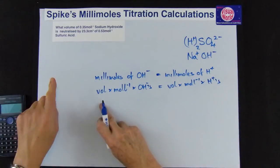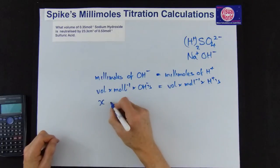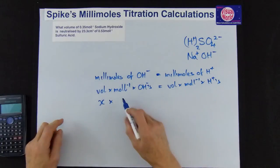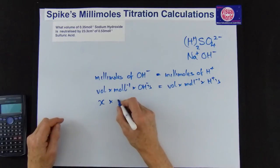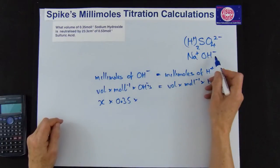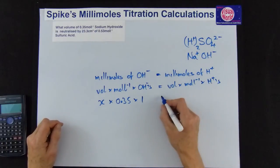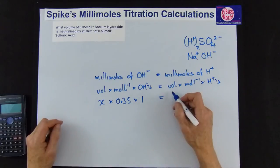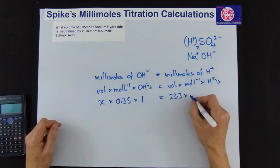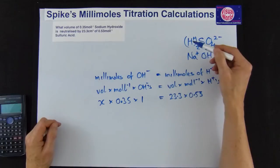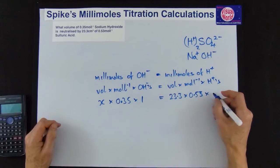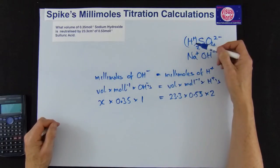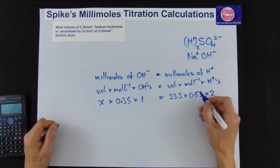So this time we're actually looking for the volume so the volume is the X times the moles per liter is the concentration is 0.35 times the number of OH⁻ is 1, so that's equal to the volume of the acid which is 23.3 times the moles per liter for the acid which is 0.53 times the number, it's sulfuric again so it's 2 H+. If it was hydrochloric it would just be 1 or nitric it's just 1 but in this case it's 2.